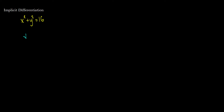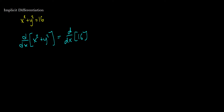We're going to differentiate both sides with respect to x. So the derivative with respect to x of x squared plus y squared equals the derivative with respect to x of 16. The right side is equal to zero, and we split this into two parts: the derivative with respect to x of x squared, plus the derivative with respect to x of y squared. We have a little problem here — what do we do with the derivative with respect to x of y squared?